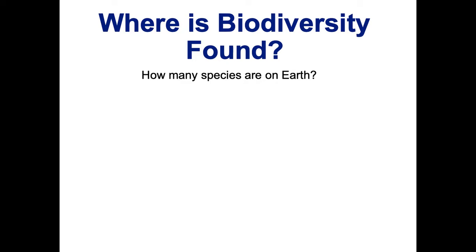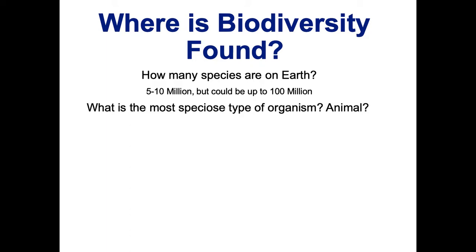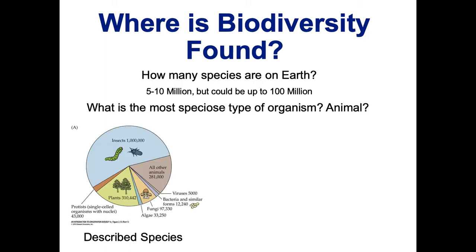How many species do you think are on Earth? Estimates range a lot, but the best estimates seem to be between 5 and 10 million, though it could be up to 100 million species. What do you think is the most speciose type of organism? The most speciose type of animal is actually insects — there are way more insects than anything else on the planet. Some people say bacteria, and it's possible, since new kinds of bacteria are found all the time.